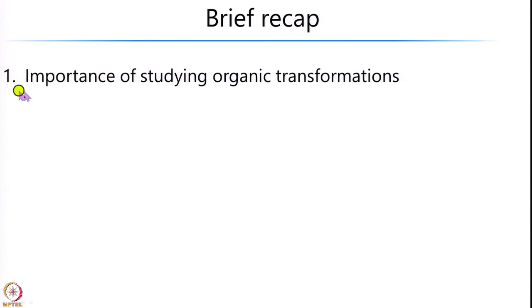In the last class, we had looked at what are called as organic reactions or organic transformations, and we had briefly looked at the importance of organic transformations. We had said that many of the things we come across in day-to-day life are molecular in origin, and these in turn are made up of organic molecules. In order to achieve a desired function — which could be a molecular motor, a specific drug, or any other application — it is very important to make that molecule in high purity, both chemical as well as stereochemical.